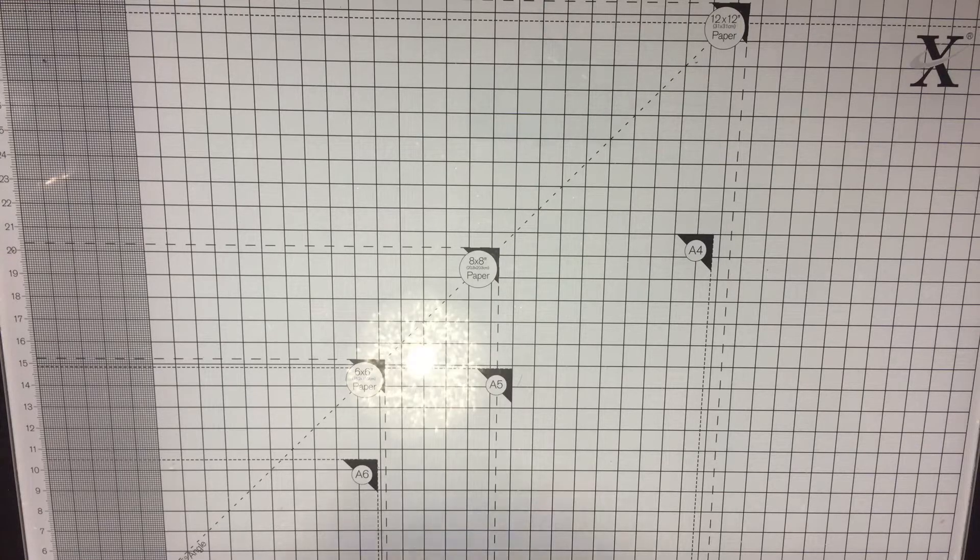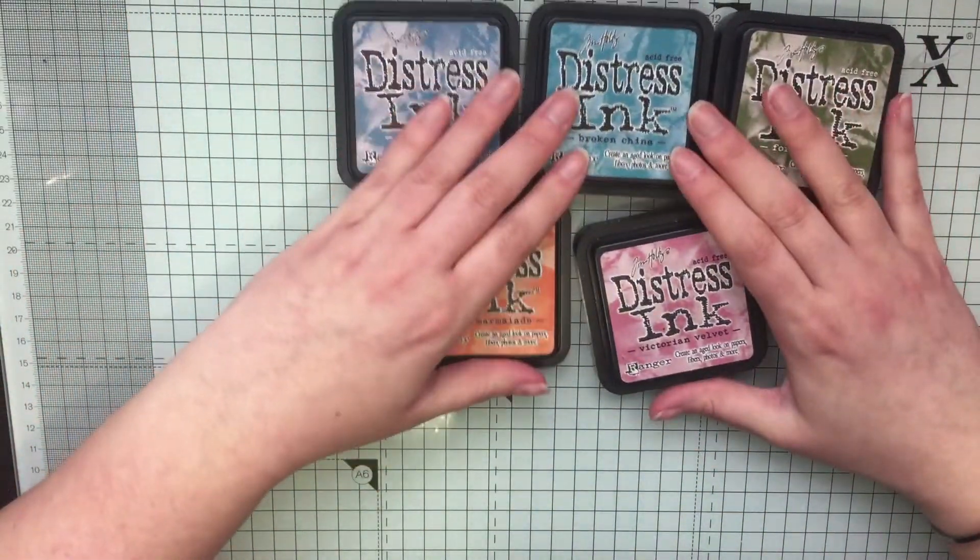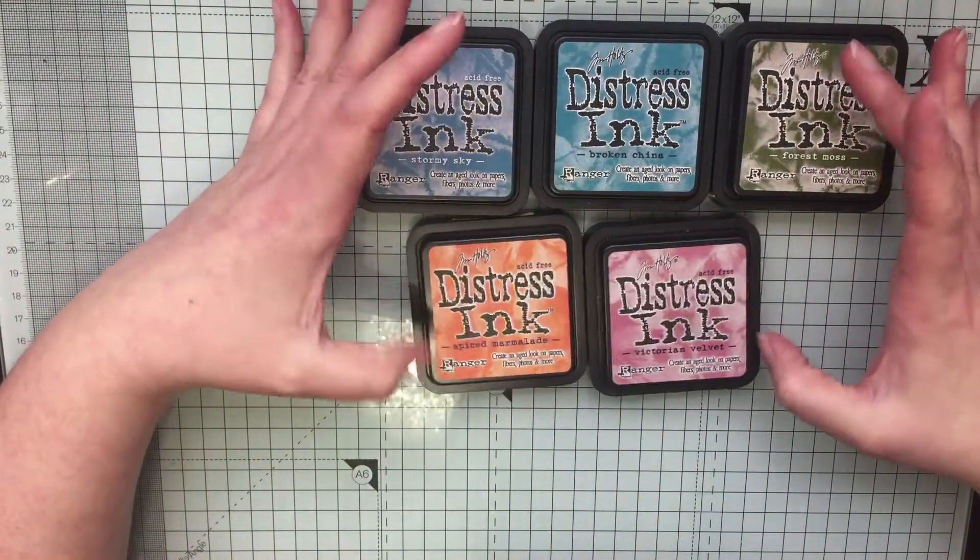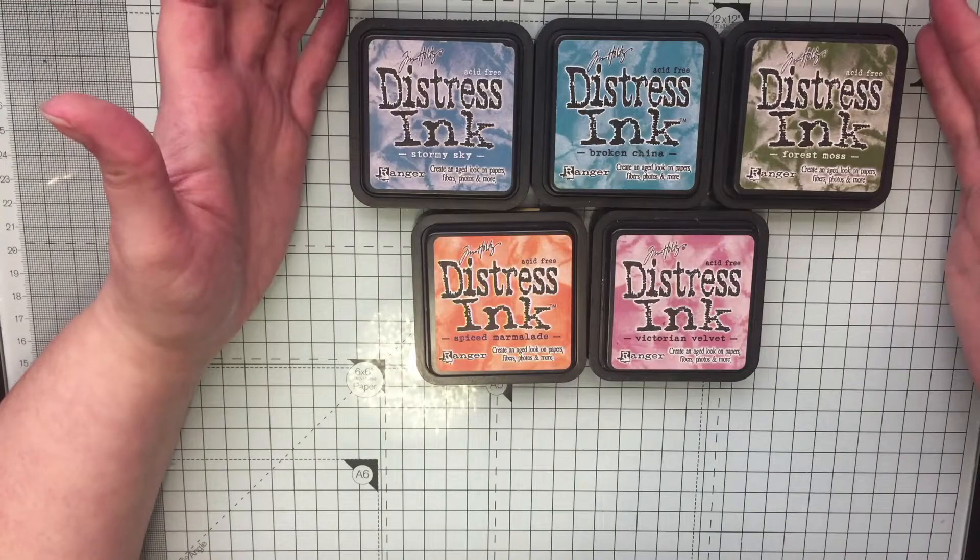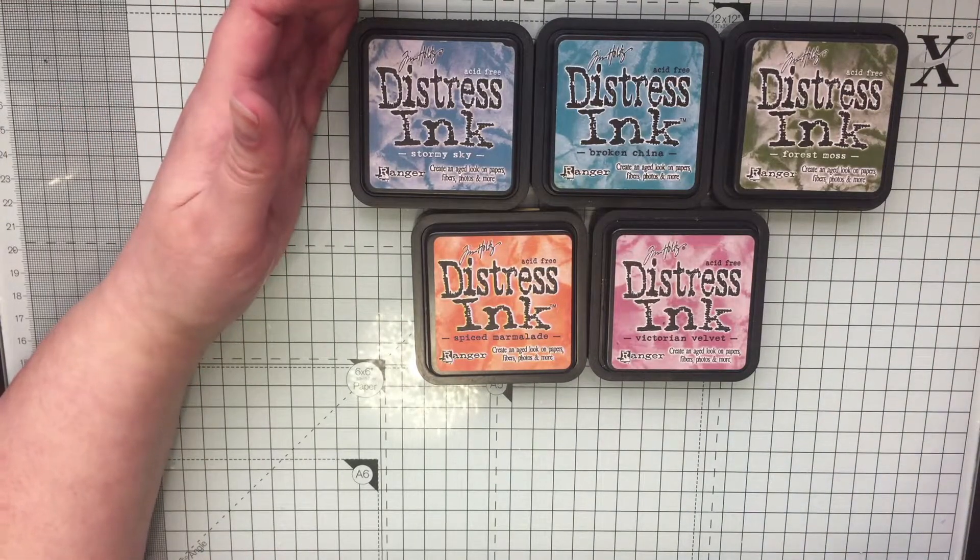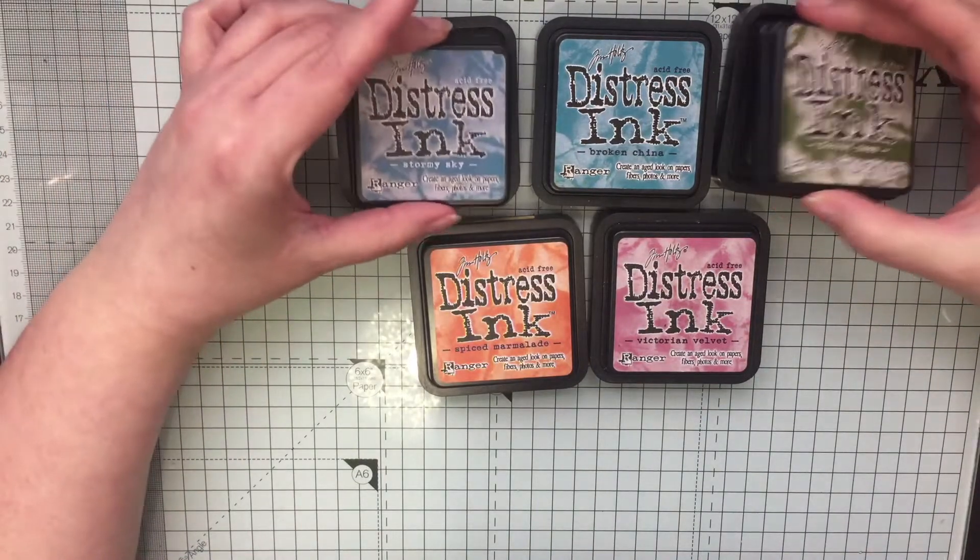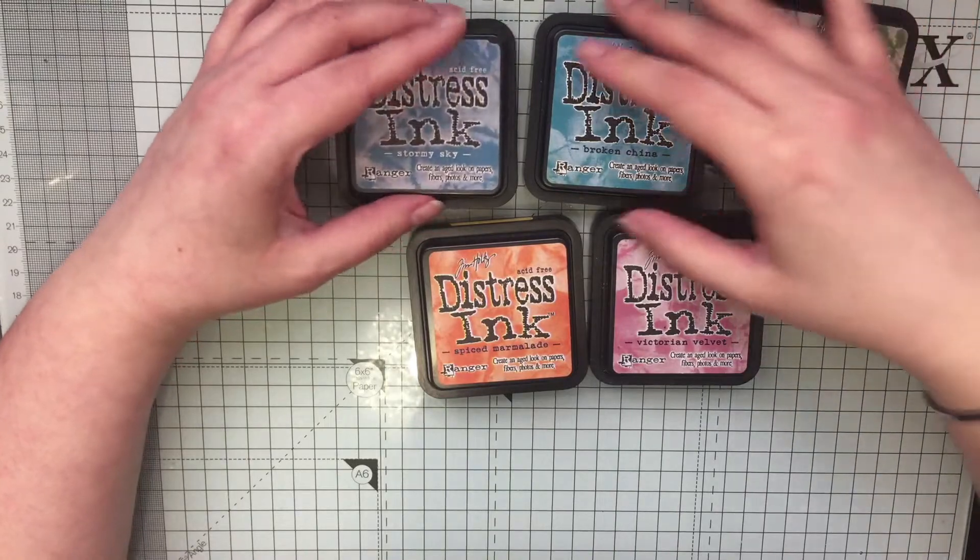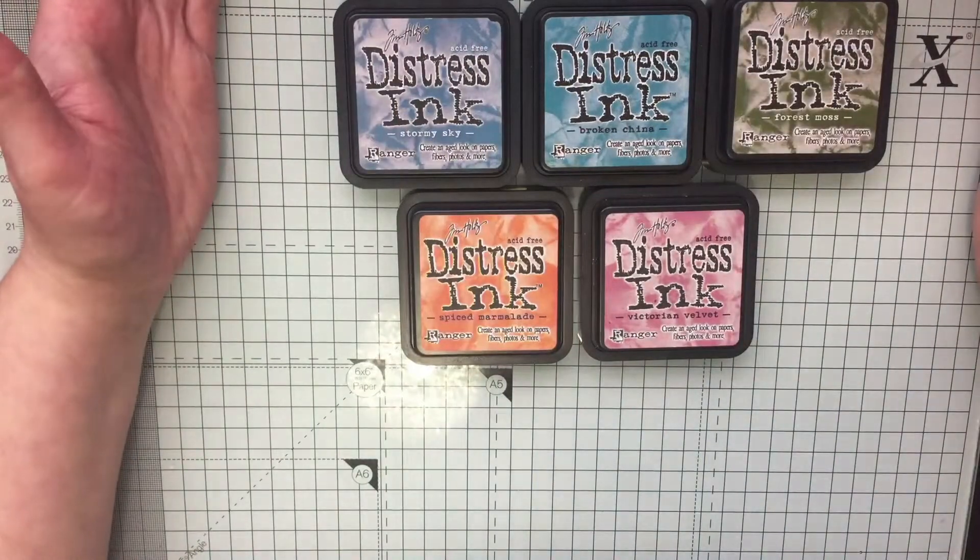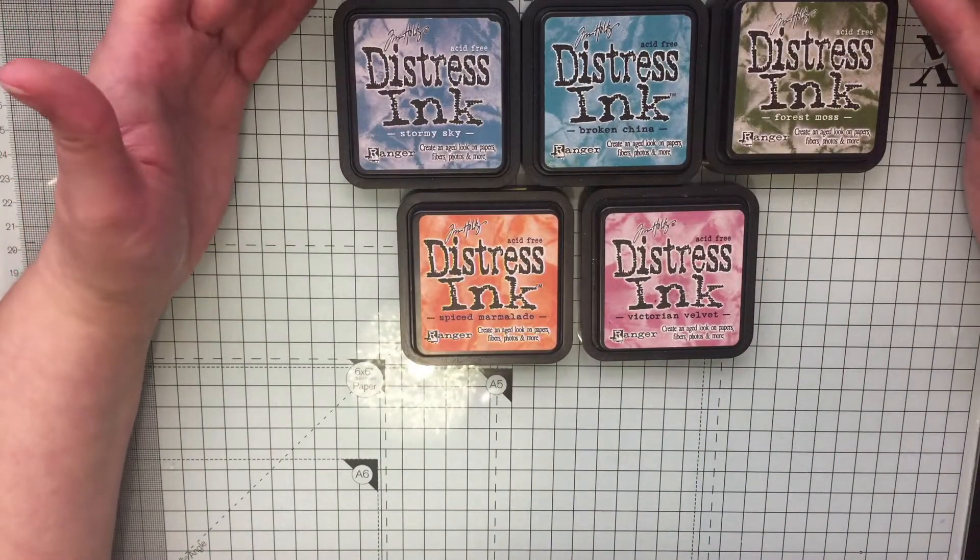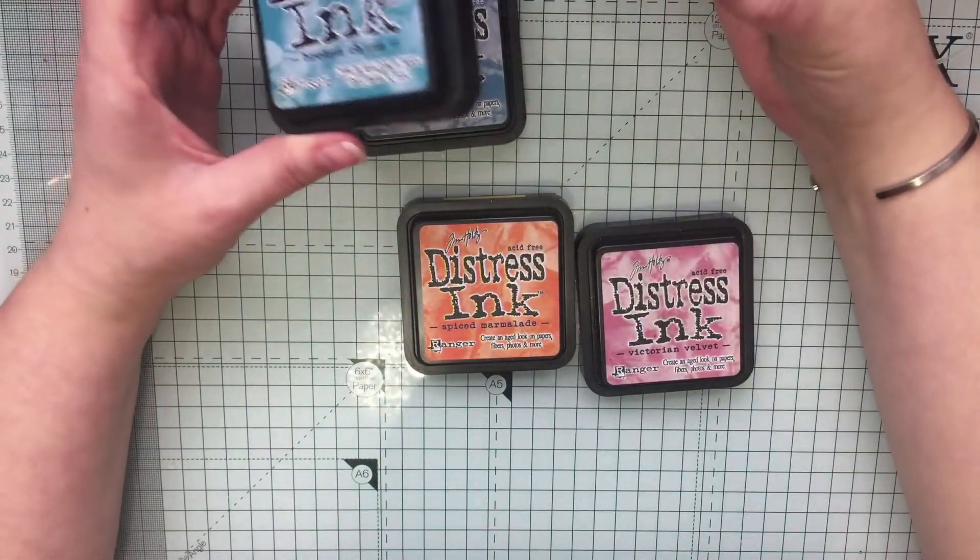Next thing I did was I destashed these big versions of the distress inks because I already have them in the minis. I did a bulk tabletop sale a long time ago. As far as I know these are all still fine. I've not used them for about a year since I bought the minis. If anybody would like these, just let me know and if it's okay to pay postage that would be great.